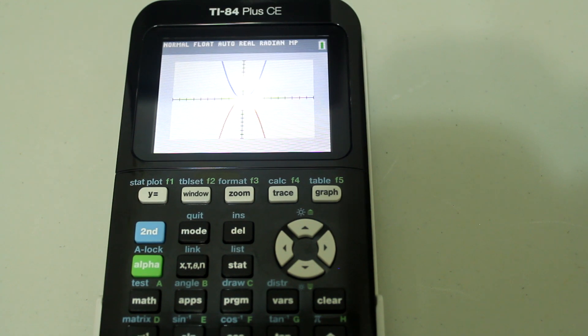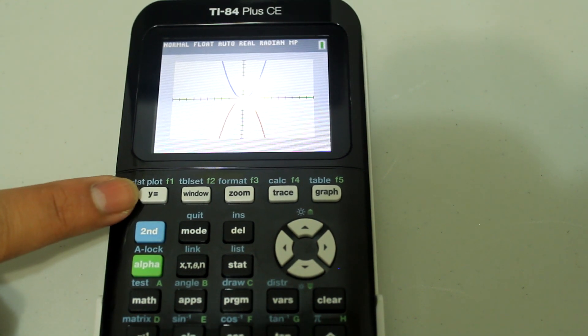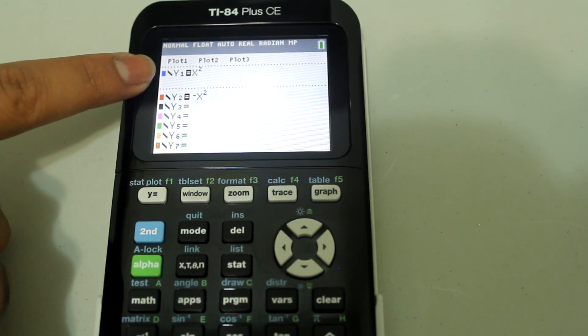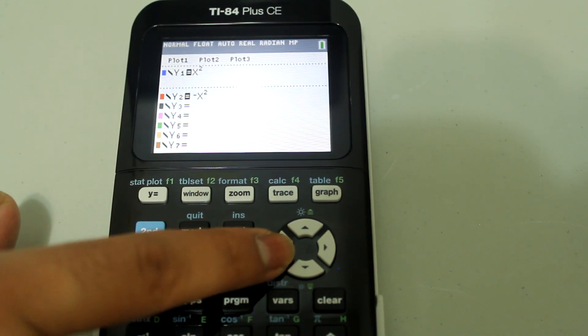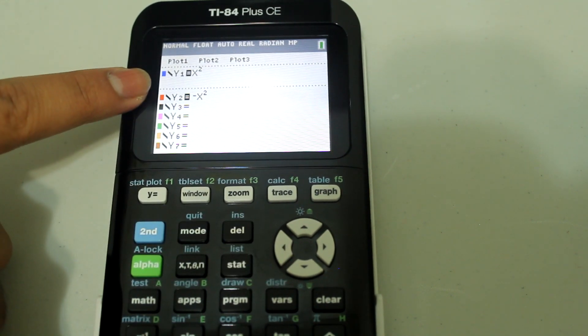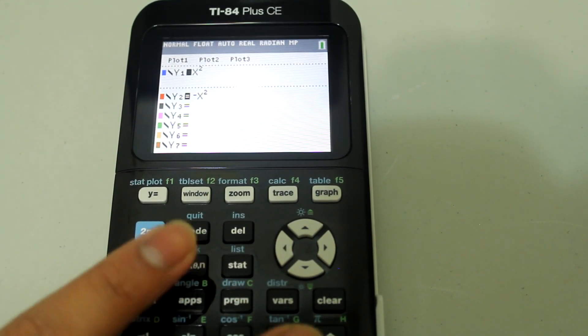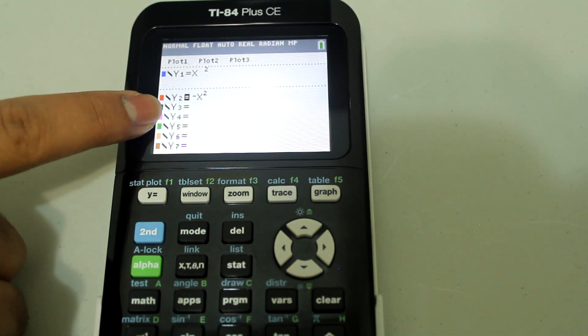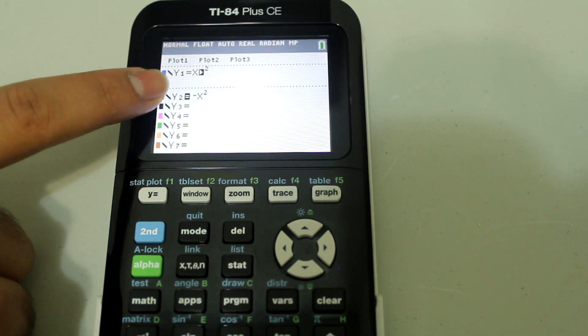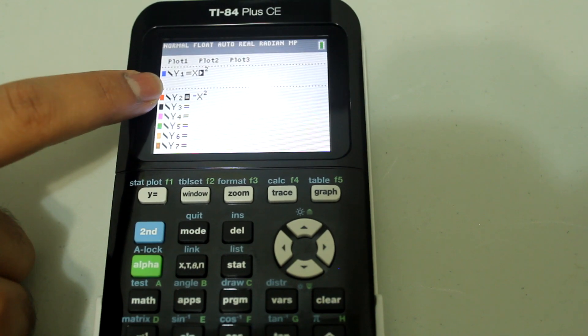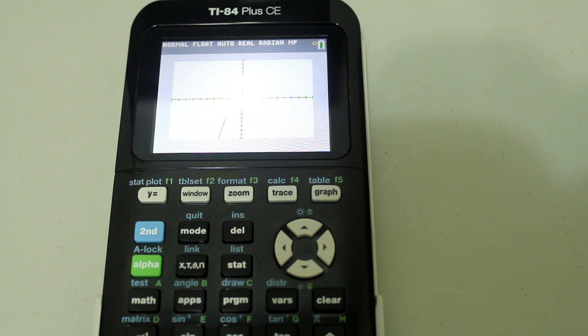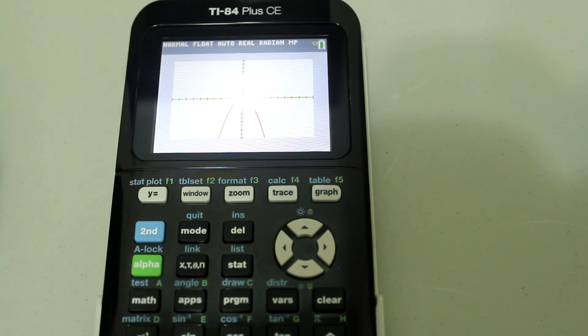Notice now I have two graphs on the screen. If I wanted to turn one of them off, all I would want to do is go back to y equals. Go to the graph I want to turn off. I want to turn off x squared so I go to that. I move the cursor onto the equal sign. Now the equal sign is blinking. I hit enter and then I move the cursor away from the equal sign. Now see that negative x squared, the equal sign is highlighted in black. But in the x squared, the equal sign is not highlighted. So when I go back to graph, I see that x squared is not on the graph anymore.